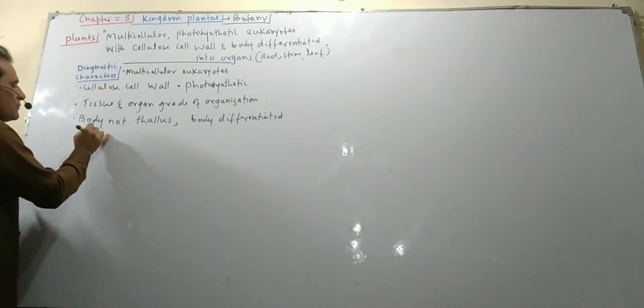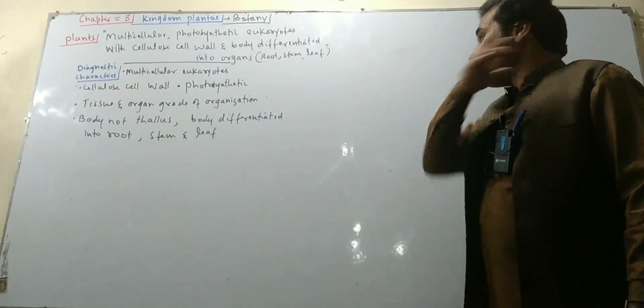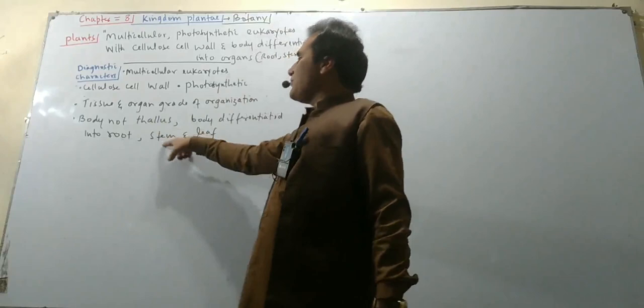The body is differentiated into root, stem, and leaf. The whole plant — about 99 percent of plants — would have been growing from the leaves.